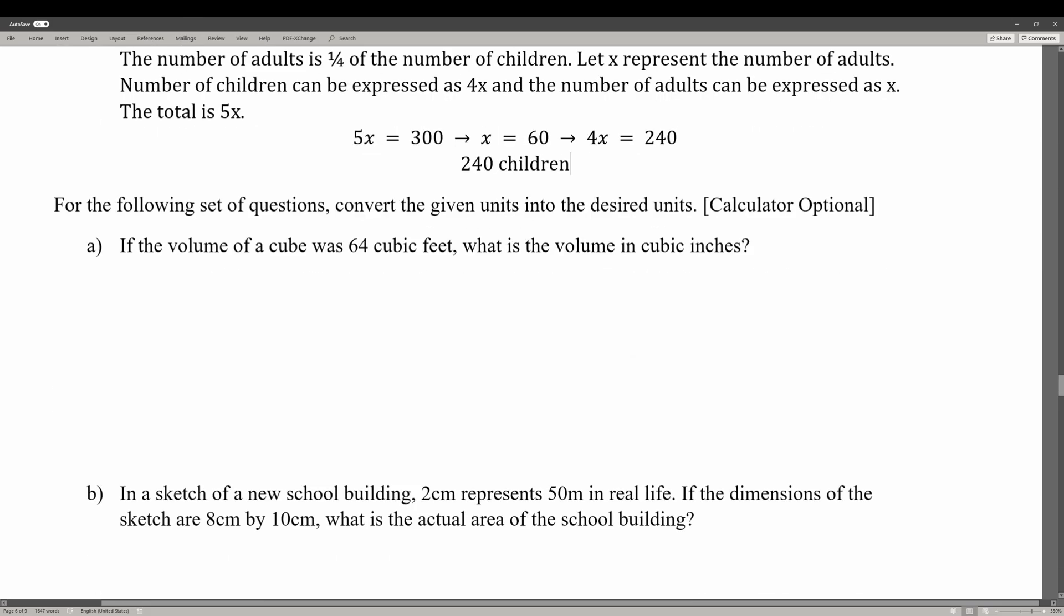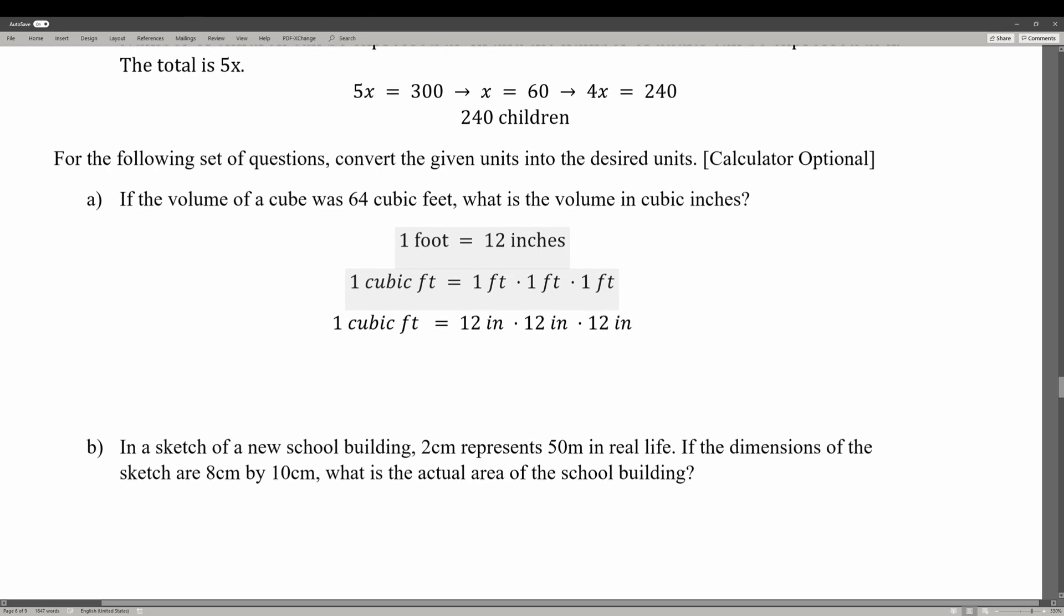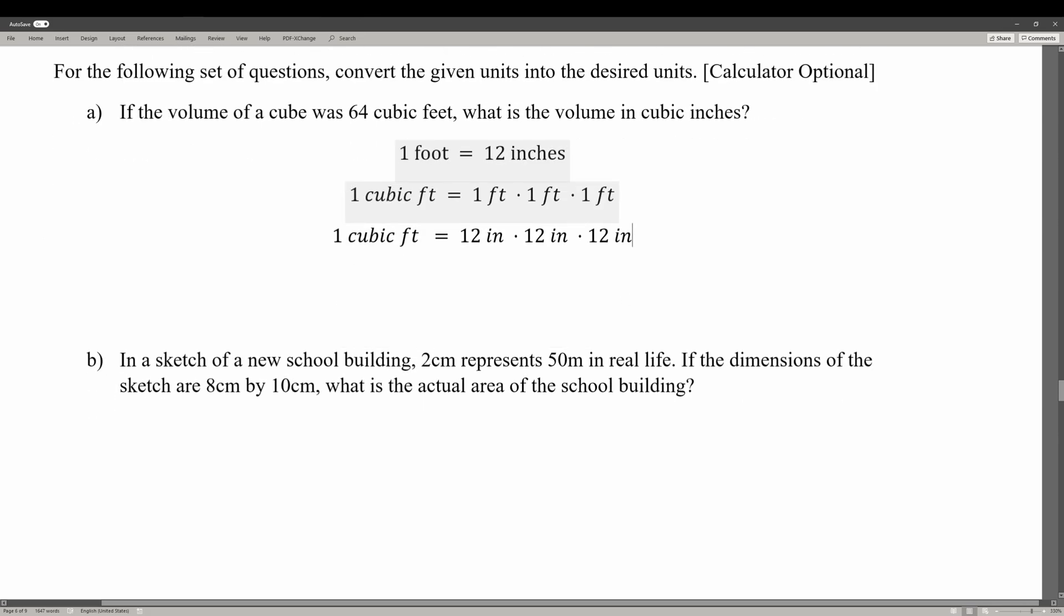For the following set of questions, convert the given units into the desired units. If the volume of a cube was 64 cubic feet, what is the volume in cubic inches? Recall that 1 cubic foot is 1 foot times 1 foot times 1 foot, and 1 foot is 12 inches. We substitute to get 1 cubic foot equals 12 inches times 12 inches times 12 inches, which equals 1,728 cubic inches. Lastly, we multiply by 64, and we get 110,592 cubic inches.